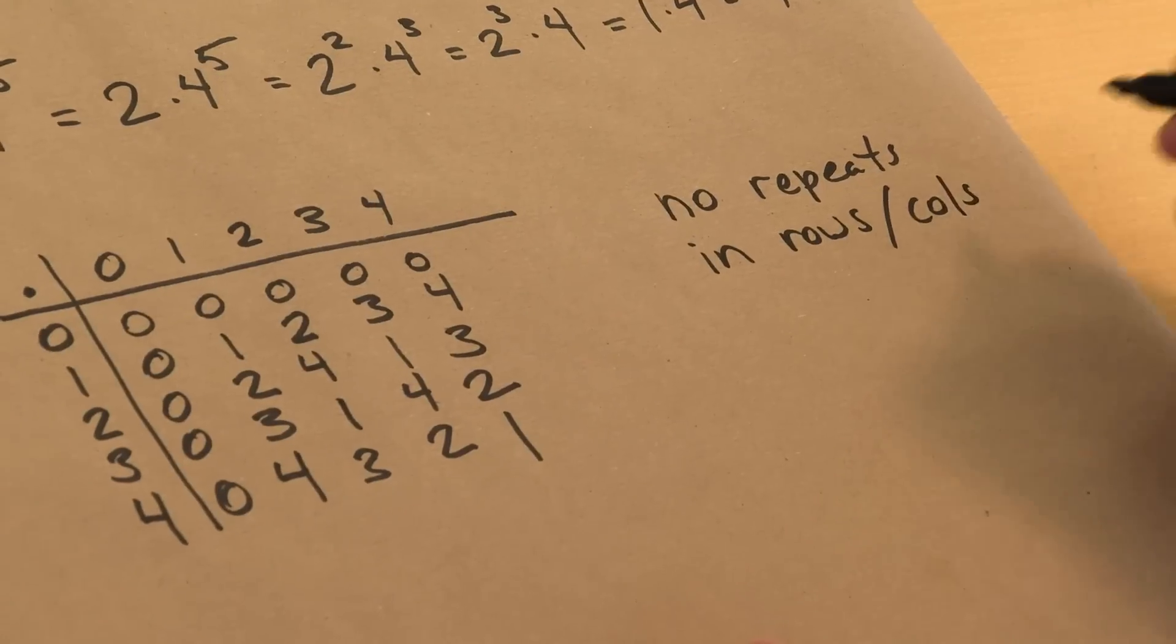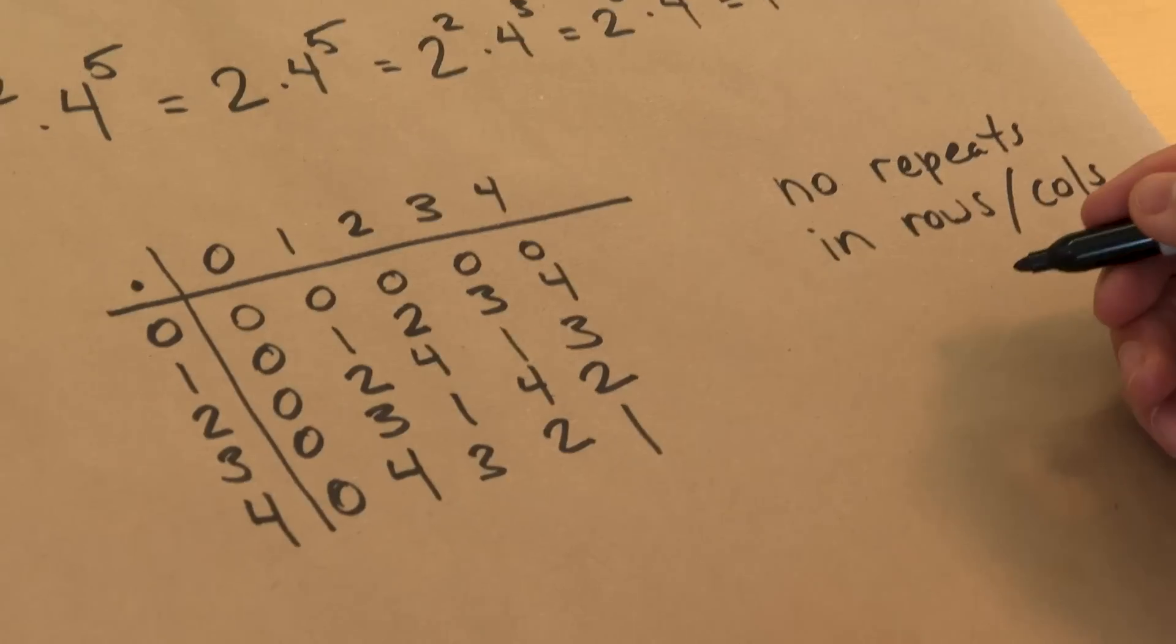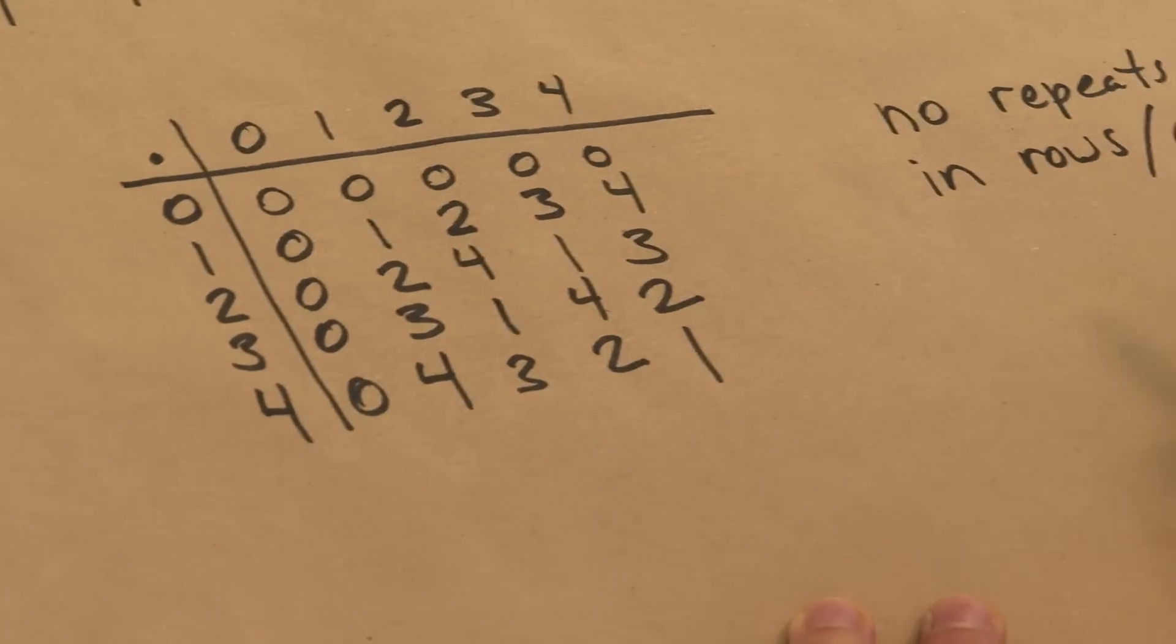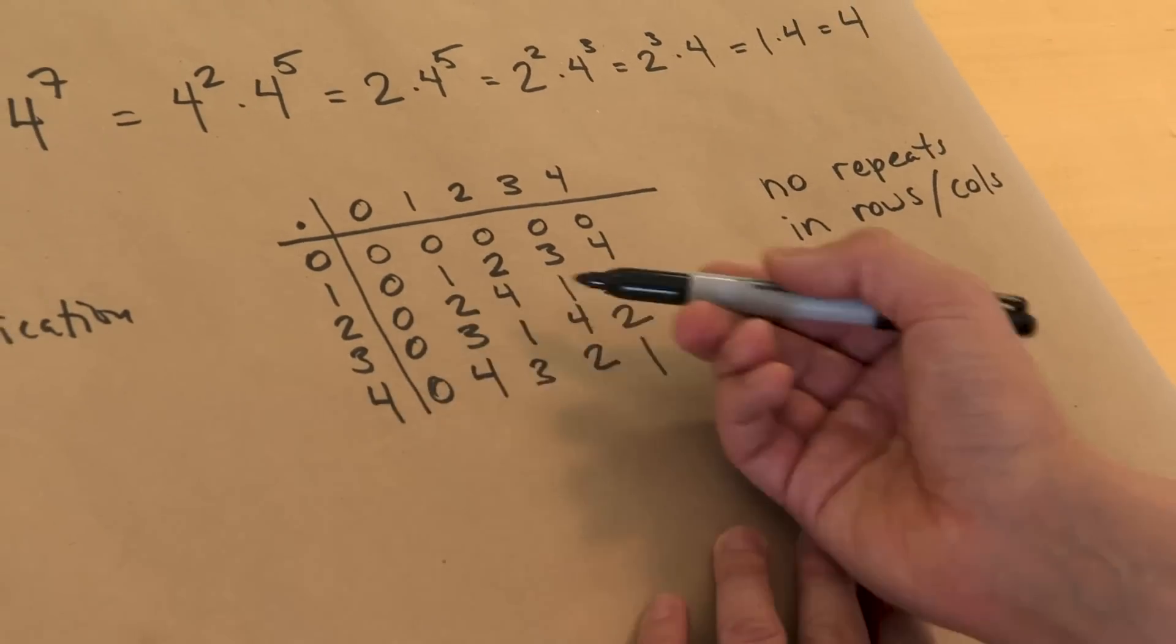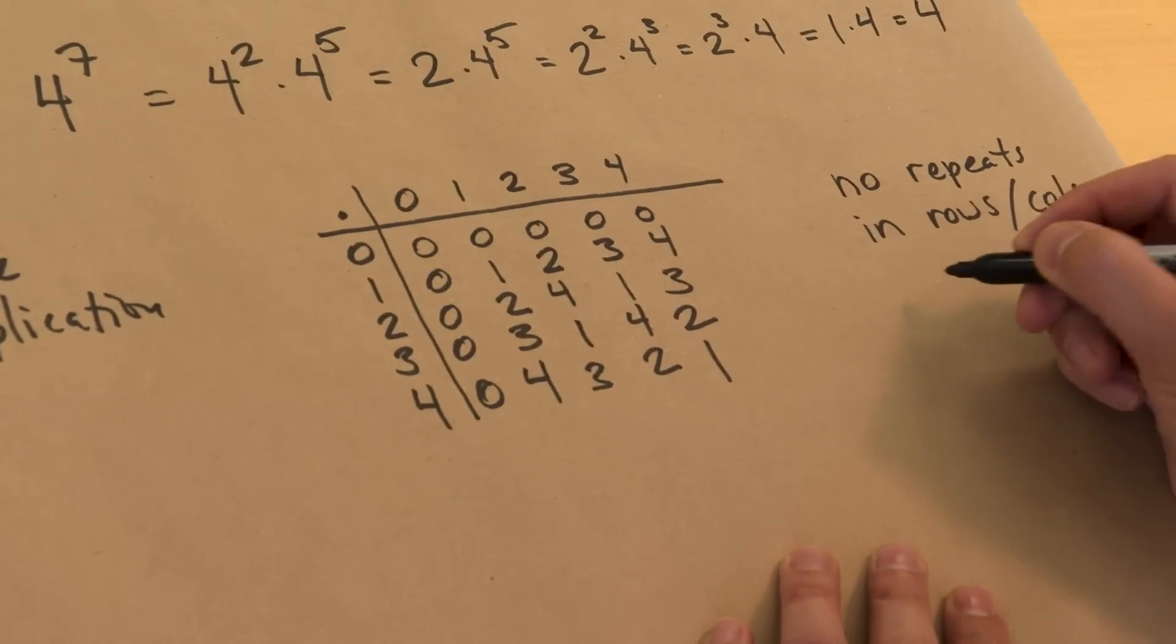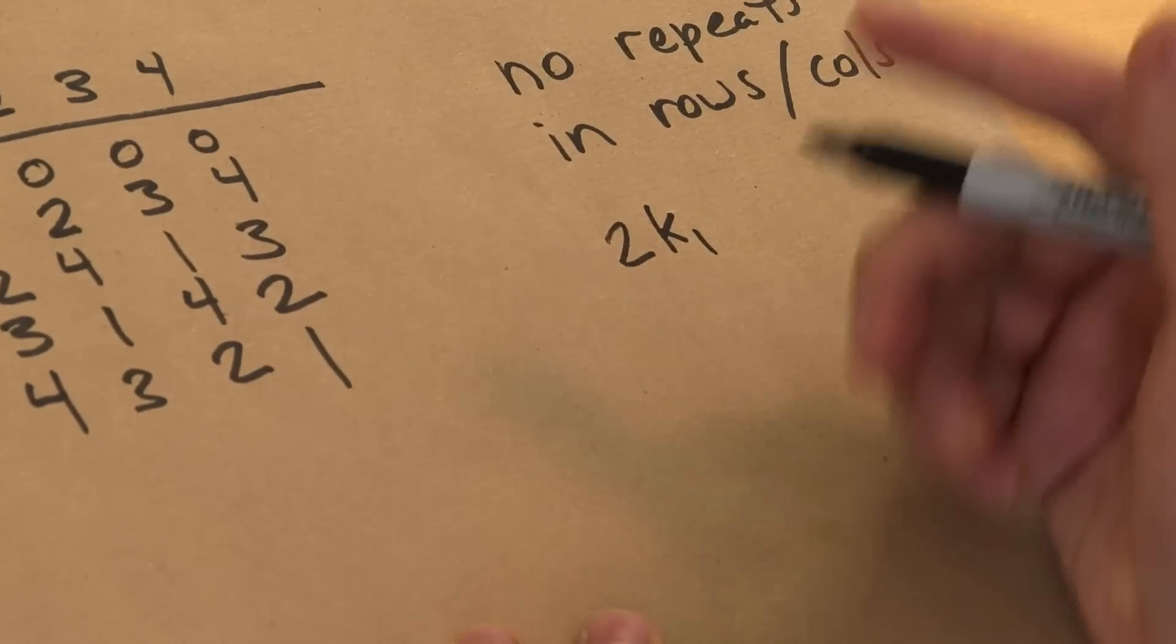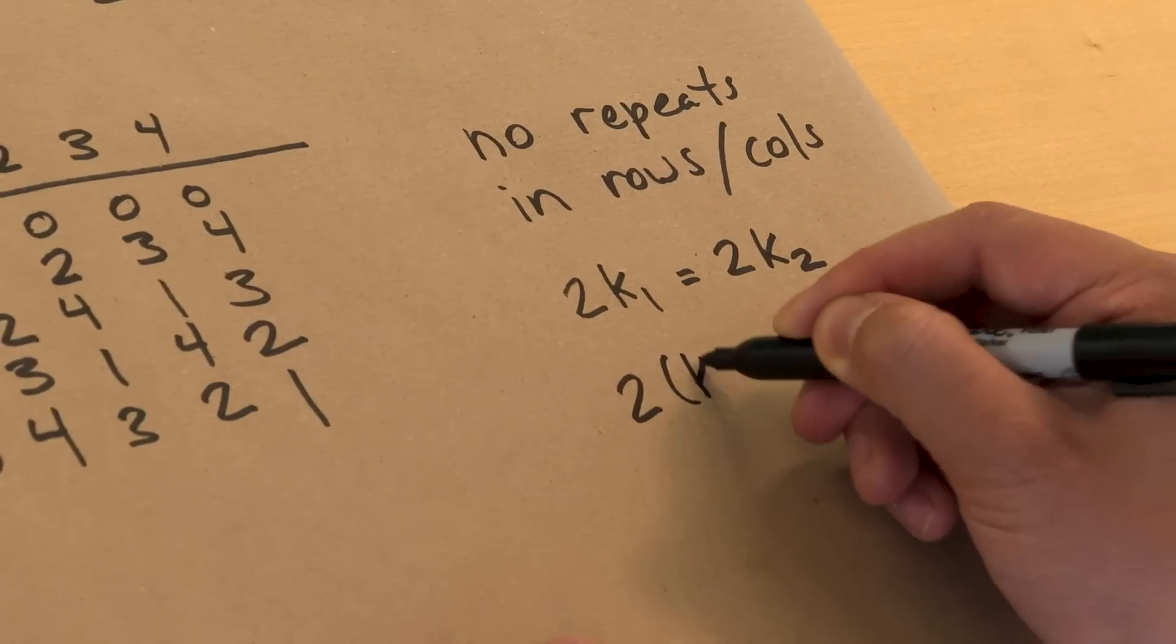So what would it mean for there to be a repeat in a row or column? Let's do the rows for example. Let's say that I had one entry. Maybe we'll check and see that here this was 5 clock, but I'll show you there's no repeats in the second or the third row for the P clock. So if I had 2 times a number, and that happened to be equal to 2 times another number on the P clock, then that would give me that 2 times K2 minus K1 was 0 on the P clock.